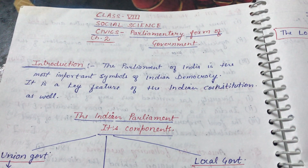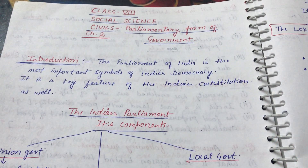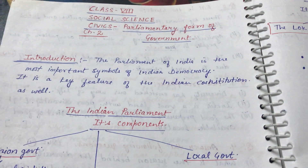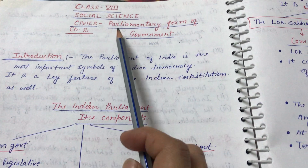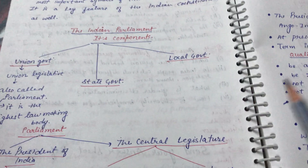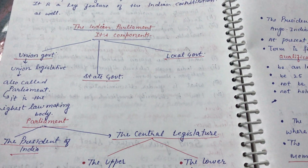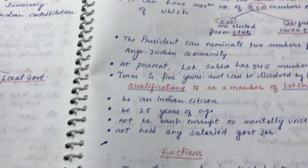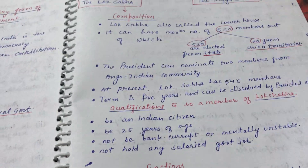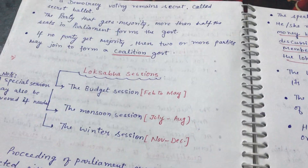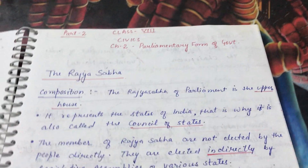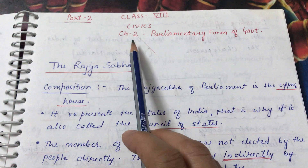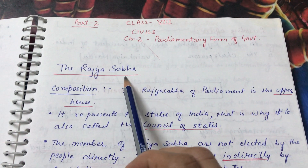Good morning students, Priyanka Sharma here. I'm again with a new video from your civics chapter. In the earlier video we discussed the first part of the parliamentary form of government, covering the Lok Sabha, the Indian Parliament and its components, Lok Sabha's compositions and sessions, and the Speaker and its functions. Now in part two, I'm going to discuss the Rajya Sabha.